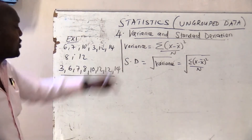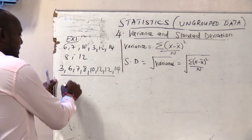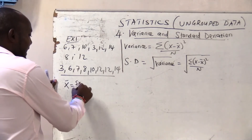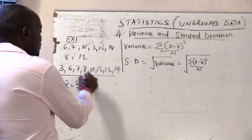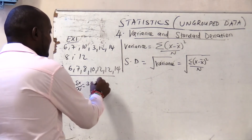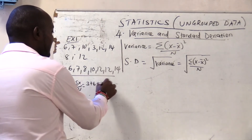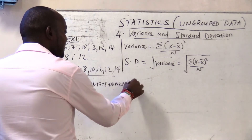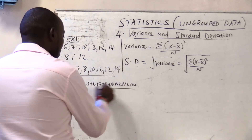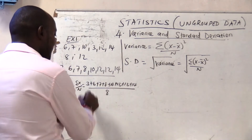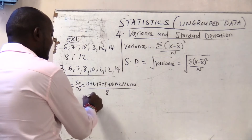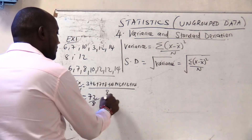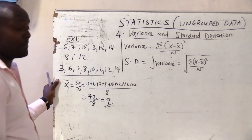The first thing we need to calculate is our arithmetic mean, which is the summation of x all over n. So we add 3 + 6 + 7 + 8 + 10 + 12 + 12 + 14 all over 8. The summation is 72 divided by 8, giving us a mean of 9.